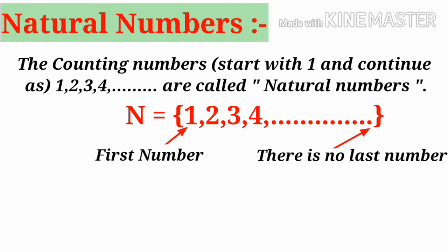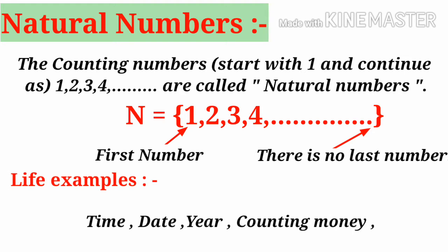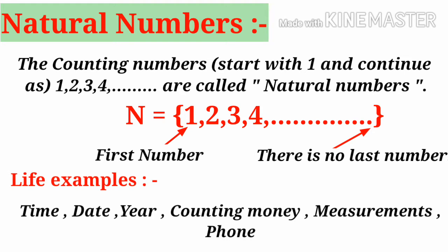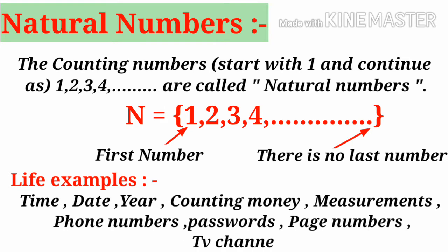We can take daily life examples where we use natural numbers. From birth to death, we use numbers in time, date, year, counting money, measurements, phone numbers, phone passwords, book page numbers, TV channels, etc. We all use counting natural numbers.